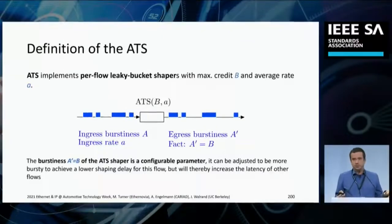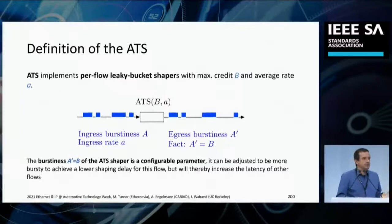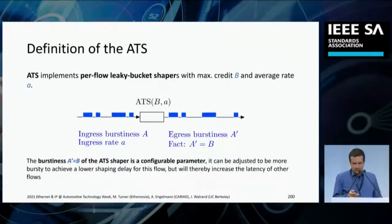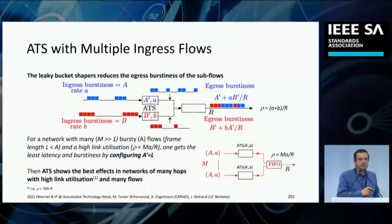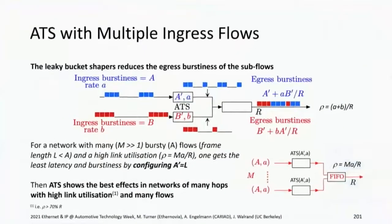With ATS you can define an initial burst at maximum burst level and actually burst some frames through initially. There's an additional parameter to control. Importantly, if you set that parameter to the frame size, the nominal behavior on the outside is very similar to the credit-based shaper. But the big difference is not the shaper itself — it's how the queues are set up in 802.1 Q. Frames from different input ports need to go to different shapers in ATS, whereas they'd go into the same credit-based shaper.